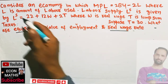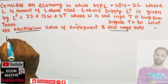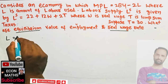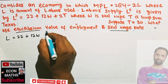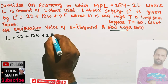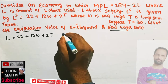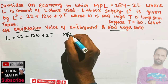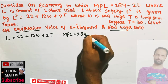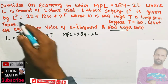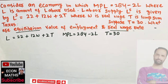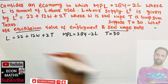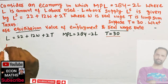Labor supply is given as 22 plus 12W plus 2T. Also, the marginal product of labor (MPL) is equal to 284 minus 2L. The lump sum tax T is given as 30.